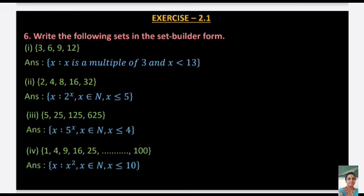Next: {5, 25, 125, 625} — these are powers of 5. So x such that x = 5^n, n ∈ N and n ≤ 4. Next: {1, 4, 9, 16, 25} — these are perfect squares, so x such that x = n², n ∈ N and n ≤ 5.